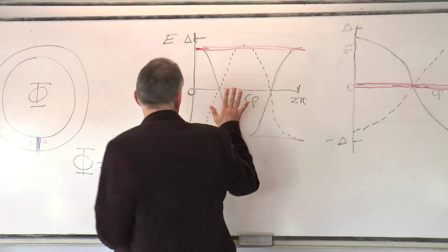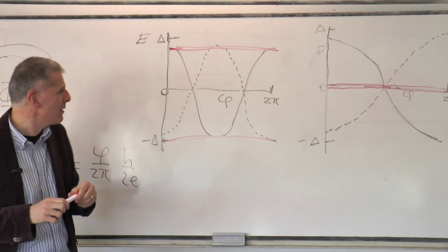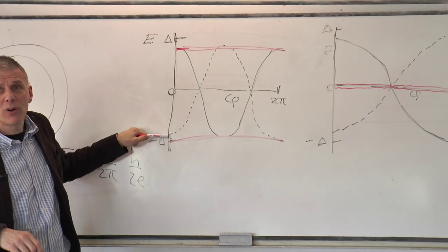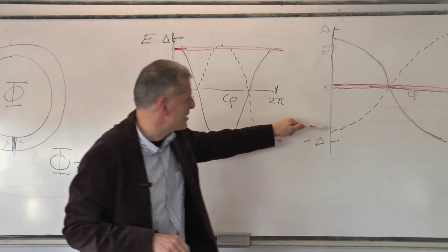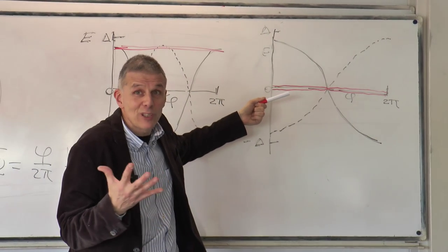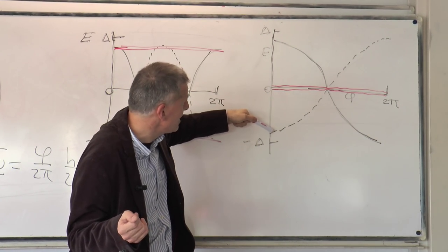If I first considered this 4-pi periodic Josephson effect, you would say, okay, easy enough. I start somewhere. Let's start here. This is supposedly to be the 4-pi periodic effect. I start here.